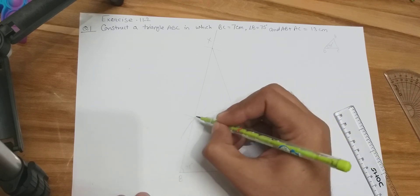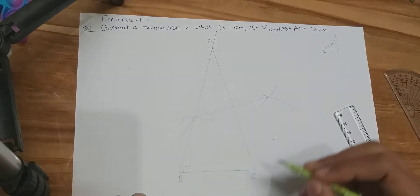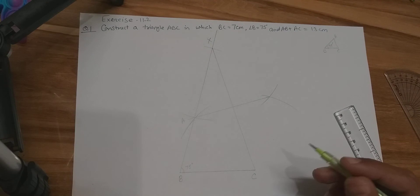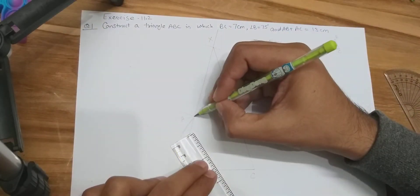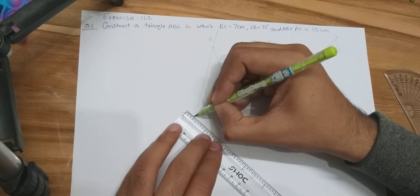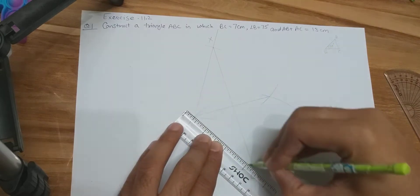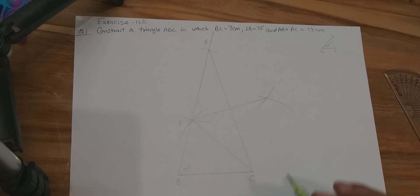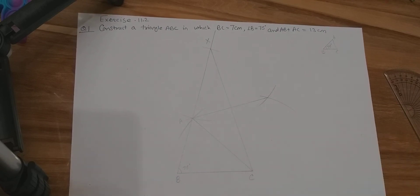This perpendicular bisector of XC intersects the line XB at an intersection point — this point is point A. Join point A with C. Triangle ABC is the required triangle.